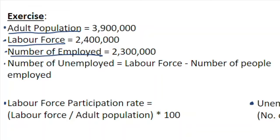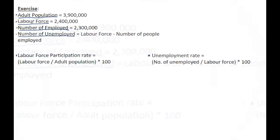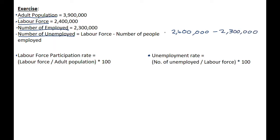The number of people unemployed is not given to us, but we can work this out. The number of people unemployed equals the labor force minus the number of people employed — so 2,400,000 minus 2,300,000. The difference between these two figures is 100,000, so in our example the number of people unemployed is 100,000.